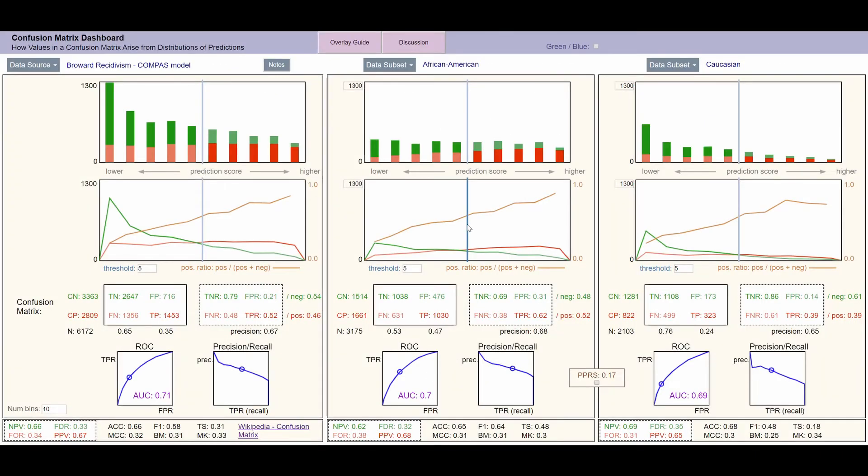The confusion matrix dashboard shows that you can usually get at least one or two of these terms to match between subpopulations if you are willing to set different decision thresholds. But that in itself is not fair.